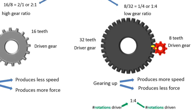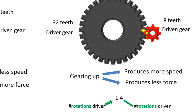Let's check this 1 to 4 ratio. The first number refers to driver rotations, and the second one to the driven rotations. Thus the driver makes 1 rotation for 4 rotations of the driven. A low gear ratio is built for speed. In terms of number of teeth, the first number always refers to the driven gear — here, the driven gear has one fourth the number of teeth of the driver gear.